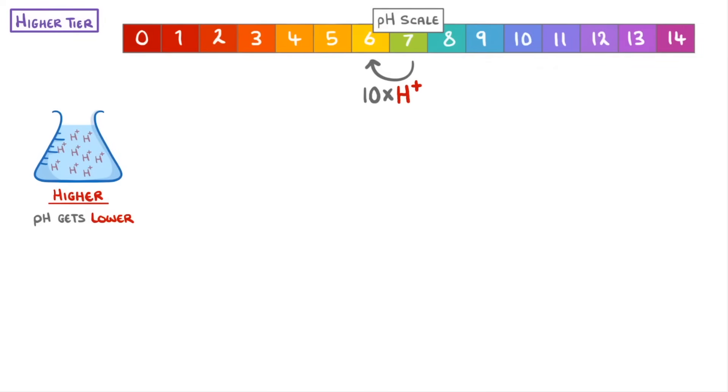So if we moved from pH 5 to pH 3, the hydrogen ion concentration would increase by 10 times and then 10 times again, so it would be 100 times higher in total. Or if we moved from pH 8 to 11, the hydrogen ion concentration would decrease by a factor of 10 three times, so it would be 1000 times lower.